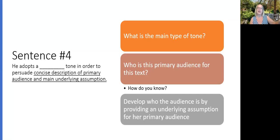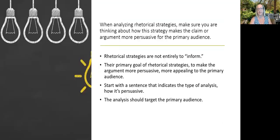Sentence four, he adopts a blank tone in order to persuade a very specific audience. What is the main type of tone? If this is a scholarly article, then informative or scholarly, those aren't meaningful distinctions. Because that's assumed, you've already identified it as a scholarly article. Who is the primary audience for this text? How do you know? Where was it published? What kinds of things is the author assuming that the audience already knows? And you should develop who the audience is by providing an underlying assumption for the primary audience.